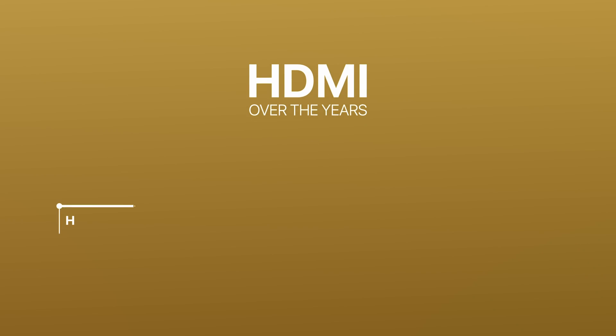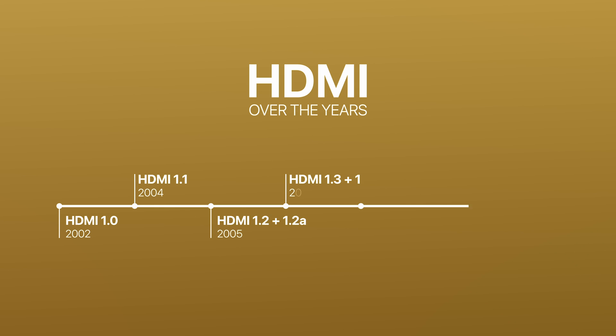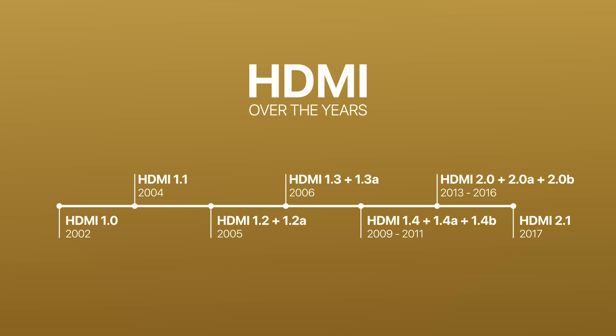Over the years, many HDMI versions have been developed. Today there are more than six HDMI standards, from 1.0 to 2.1, which are divided into the first and second generation. The development of this type of cable was a natural response to the changing capabilities, parameters, and of course functionalities of devices used for recording, reproducing, and displaying digital content.